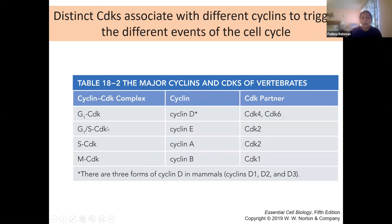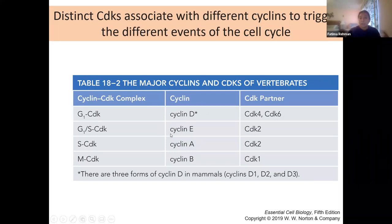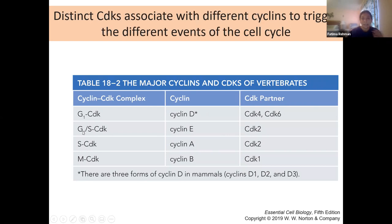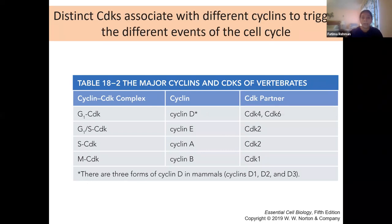Cyclin E helps the cell transition from G1 into S phase — its production starts going up at the end of G1 triggering the cell into S phase, and it binds to CDK2. Once a cell is in S phase and actively replicating DNA, it does so with the help of cyclin A. Cyclin A production or activation is a clear sign that the cell is currently in S phase, also binding to CDK2.